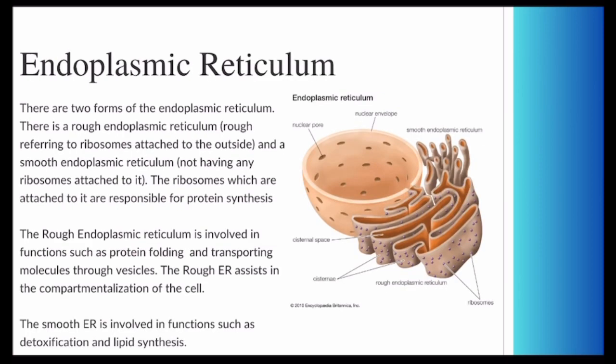These ribosomes can either be free-floating within the cytoplasm, or they can be attached to another organelle, in which it can be attached to the rough endoplasmic reticulum, which gains its name from the ribosomes attached to it. The rough endoplasmic reticulum is responsible for protein folding and transporting molecules through vesicles. It also assists in compartmentalization.